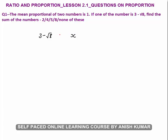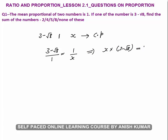Their mean proportion is one. The mean proportion always lies between the given two numbers. So these three numbers will be in continued proportion. We know that whenever three numbers are in continued proportion, first by second equals second by third. Cross multiplying, we get x into (3 minus root 8) equals 1.